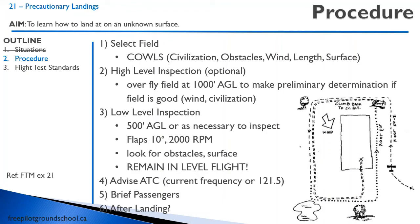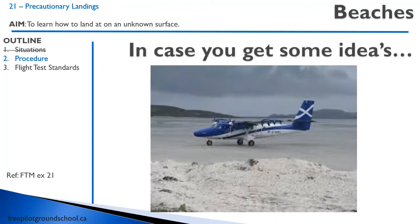The important thing is just to be level on that low-level inspection and give yourself plenty of room. Because remember, after your low-level inspection, your downwind will tend to be a lot tighter since you didn't have to climb out all the way on crosswind. You might see something interesting — like a twin otter on a beach — and think landing on a beach sounds like a great idea.